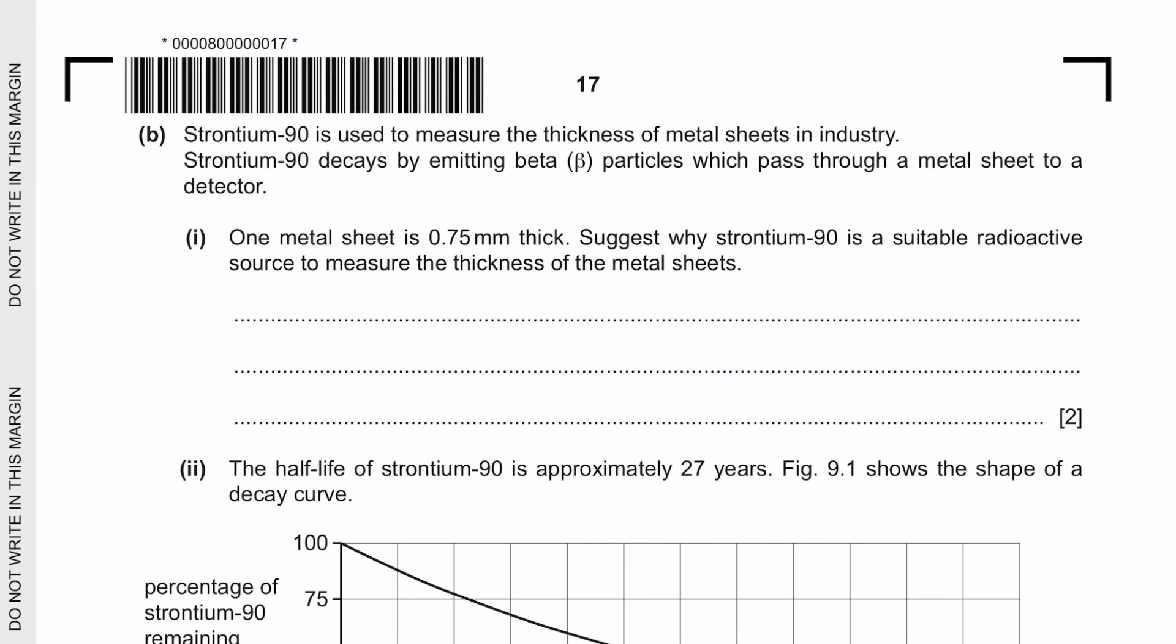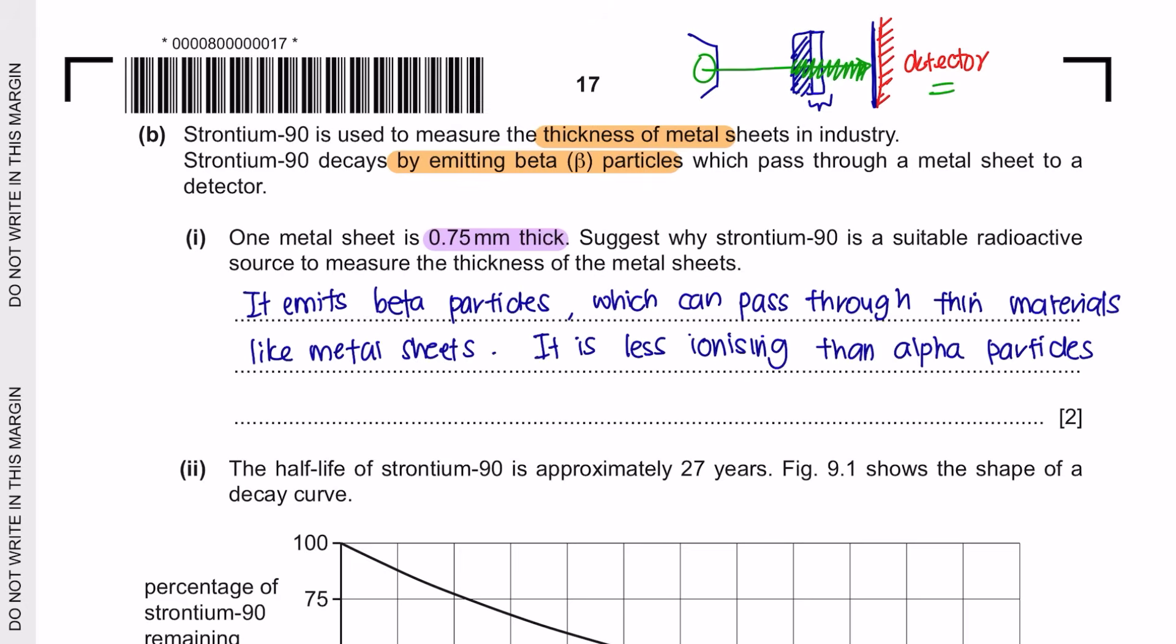Next question B. Strontium-90 is used to measure the thickness of metal sheets in industry. Strontium-90 decays by emitting beta particles which pass through a metal sheet to a detector. So the strontium-90 would release beta particle. And since beta particle can penetrate aluminum, it will penetrate the aluminum and the detector would detect it. And that is how they measure the thickness. And if the thickness is a little bit more thicker than it's supposed to be dimension, then the alpha particle will not be able to pass through and the detector will detect that. So that's how they usually measure the thickness. Question part 1. One metal sheet is 0.75 mm thick, suggest why strontium-90 is a suitable radioactive source to measure the thickness of the metal sheets. This is because it emits beta particles as being mentioned which can pass through aluminum or metal sheets. And for another mark, you can also mention that it is less ionizing, hence it is more suitable.